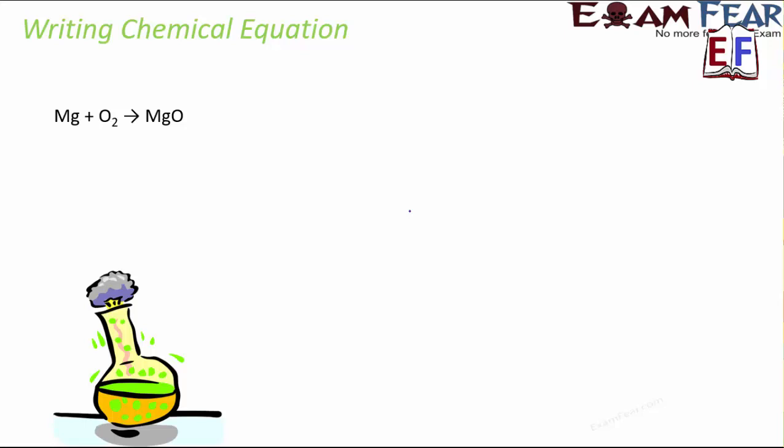And this made it short, easy to write and also balancing became easy. Now, why do we need to balance a chemical equation? That is something we will discuss a little later. But for now, all you need to understand is why is chemical equation preferred or why do we even talk about chemical equation?